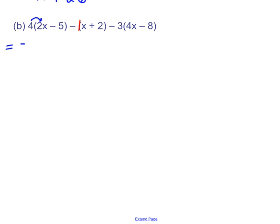So 4 times 2X is 8X. 4 times negative 5 is negative 20. Again, the next one is negative 1 times X, which will be negative X. You don't have to put the 1. Negative 1 times 2, which will be negative 2. Finally, we're going to do negative 3 times 4X and get negative 12X. And negative 3 times negative 8 and get positive 24.